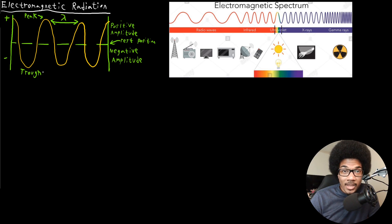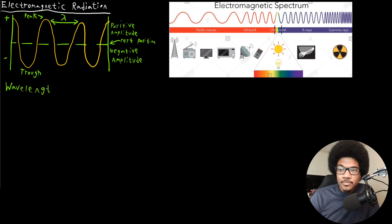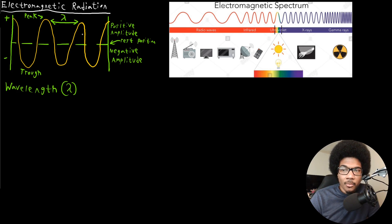We use two main properties to characterize waves. The first is the wavelength. The wavelength is typically measured peak to peak or trough to trough. This is the Greek letter lambda, which we use to denote the wavelength. So the wavelength is essentially the distance between this repeating pattern of the wave.